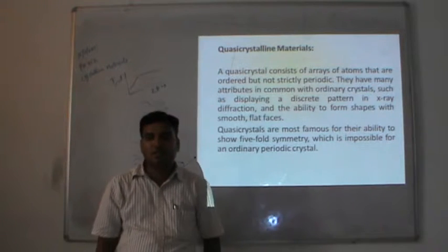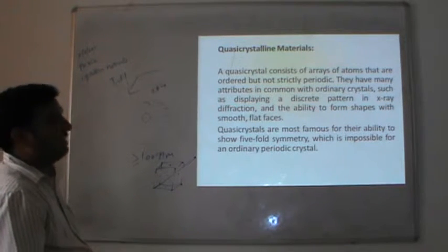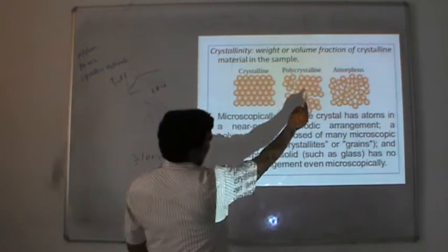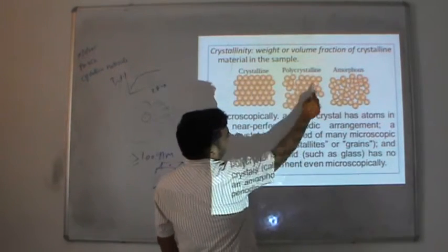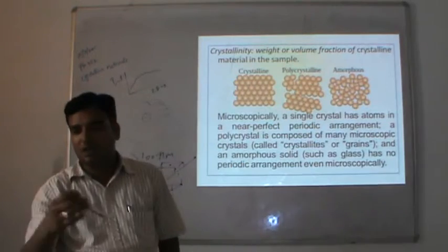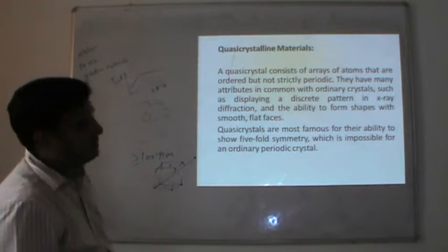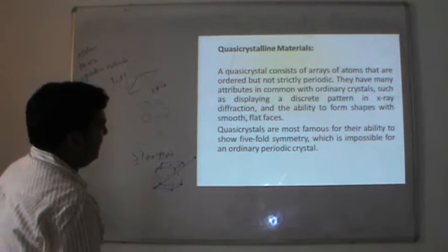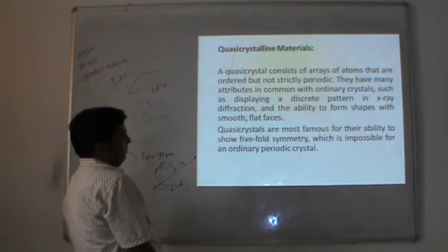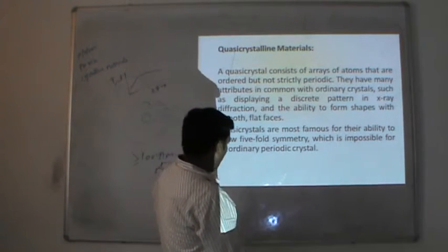A quasi-crystalline material consists of atoms that are ordered but not strictly periodic — just like in polycrystalline. These structures are known as quasi-crystalline structures. They have many attributes in common with ordinary crystals, such as displaying a discrete diffraction pattern and the ability to form with small grains. The important property of quasi-crystalline materials is their ability to show five-fold symmetry, which is impossible for an ordinary crystal.